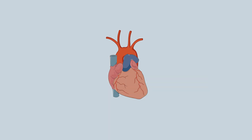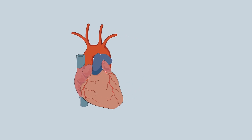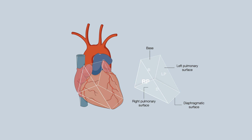When looking at the heart, it is important to note the different surfaces. Inferiorly is the diaphragmatic surface, as it is in contact with the diaphragm. Laterally is the left pulmonary surface, which is in contact with the left lung. Posteriorly is the base of the heart. And this is the right pulmonary surface, and lastly the anterior surface of the heart.